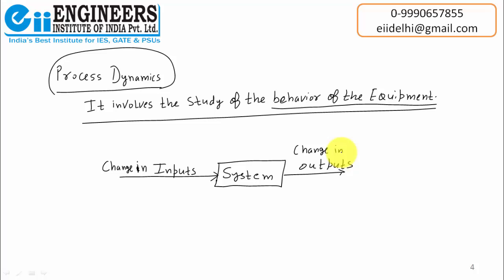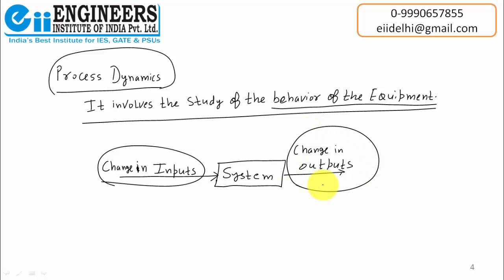If I change my inputs, the system processes those inputs and gives a change in outputs. For example, take a person whose life is going well, but then a challenge comes during the journey of life. What is the reaction of that person against that challenge? If the challenge doesn't bother that person, that's one behavior. If it does bother the person, that's a different behavior. So to know the behavior, we need to change the input — because one kind of input gives one kind of output, and that single output will not give us any clue about the behavior.